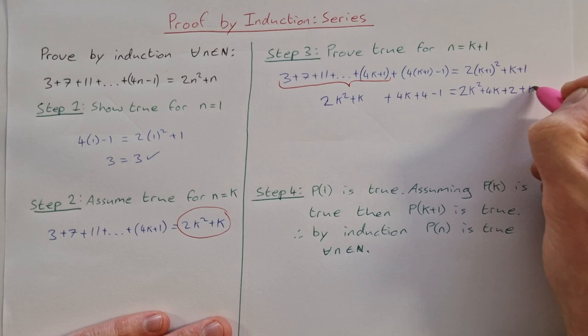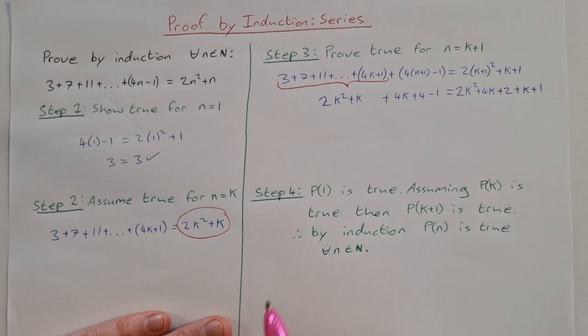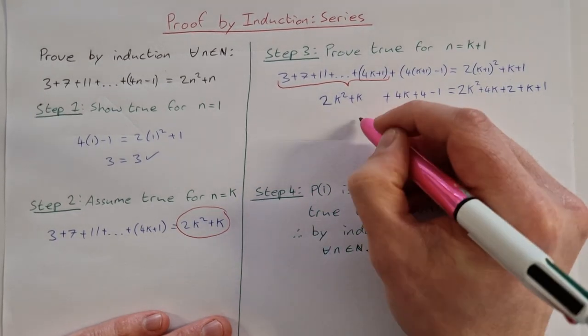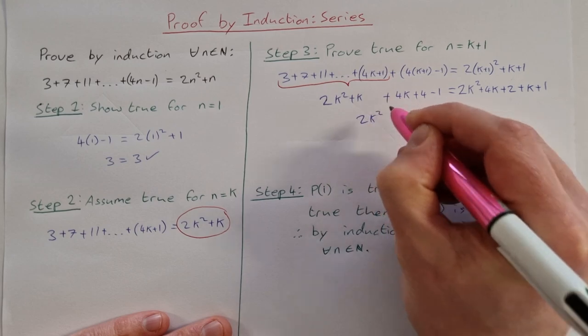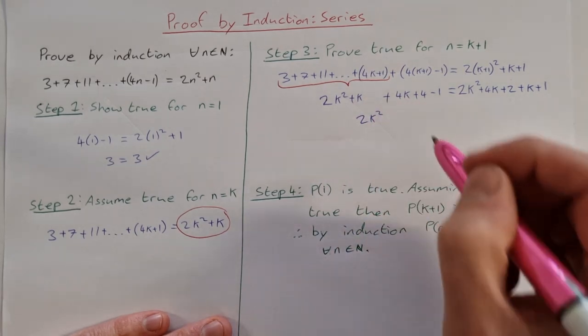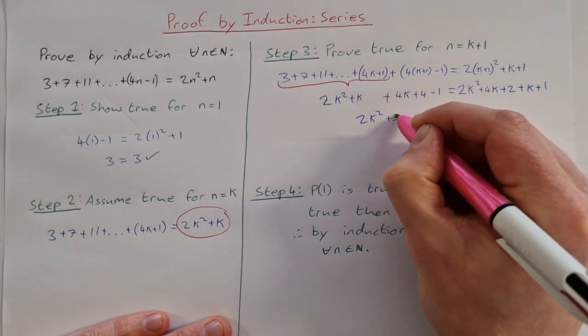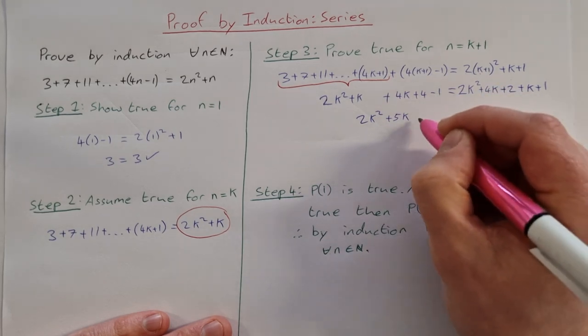And then plus k plus 1. Let's tidy up and see what we have. Left hand side I have 2k squared, I have k and 4k is 5k, and then I have 4 minus 1 is 3.